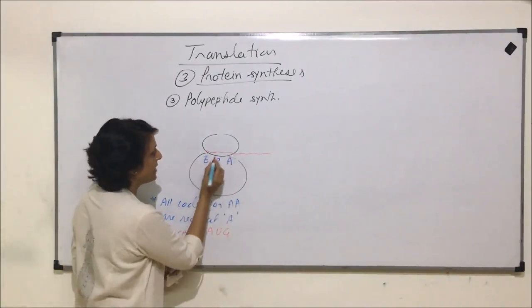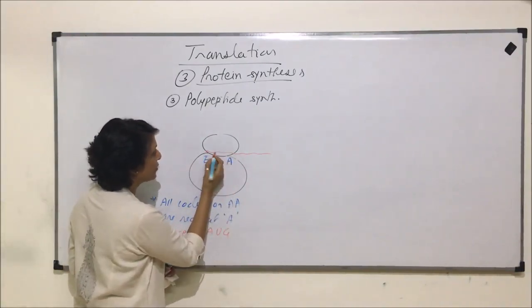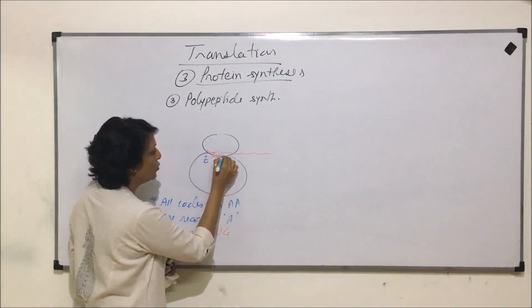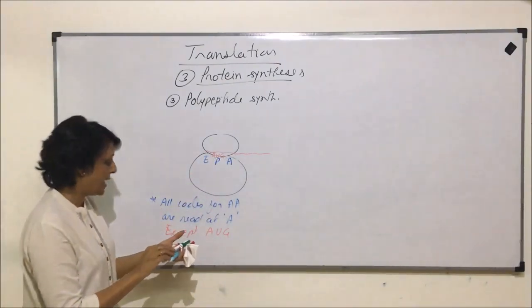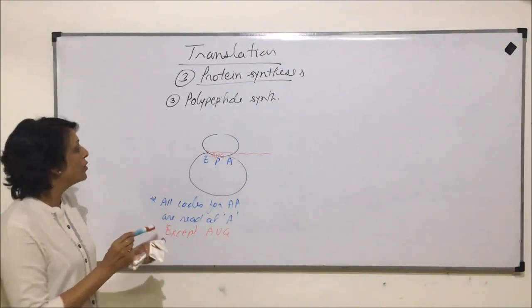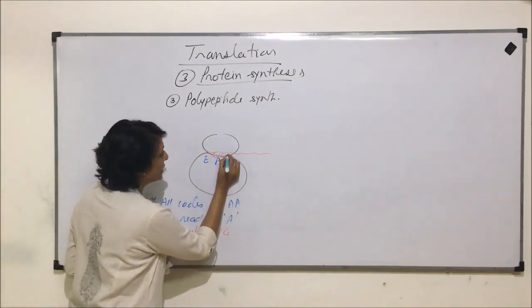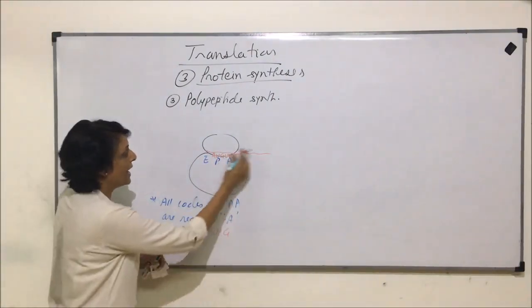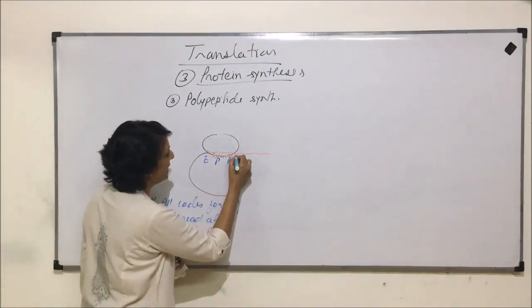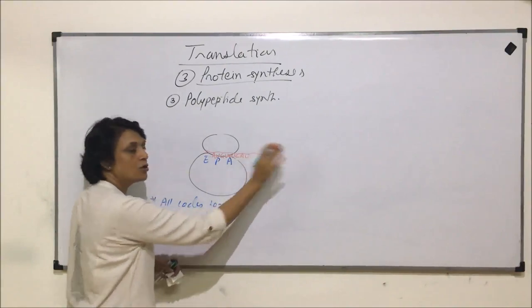That means if this is our mRNA, here is going to be AUG. First code will always come at site P and all other codes will be at A. Say the next one which comes at A is UUU, and after that we can write CAU and so on.